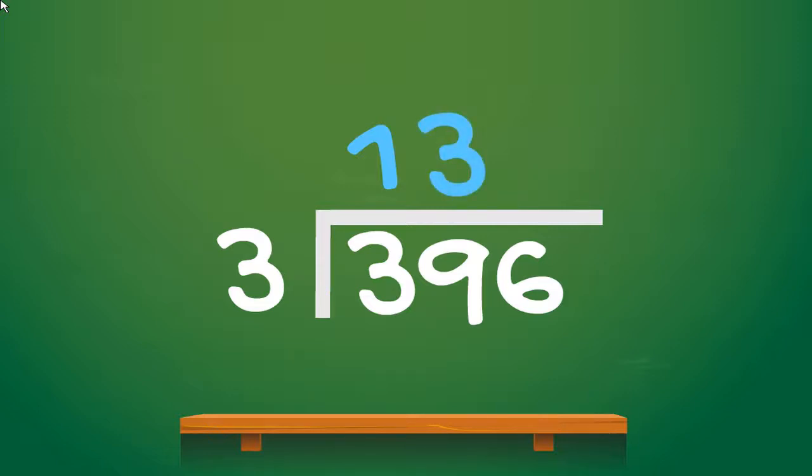So now we've dealt with the hundreds and we've dealt with the tens. Finally we have to look at the units or the single chocolate bars. We have six individual chocolate bars or six units left to divide between three shops.